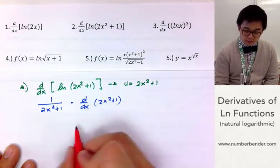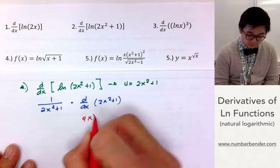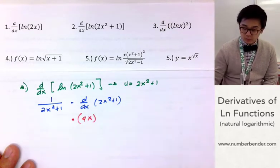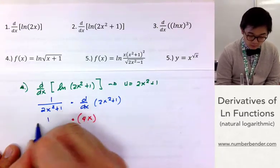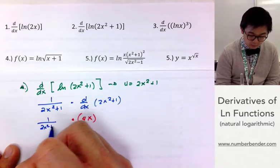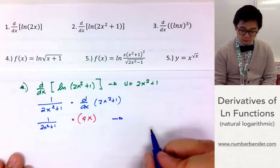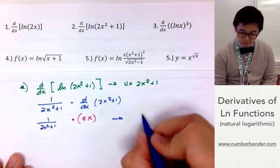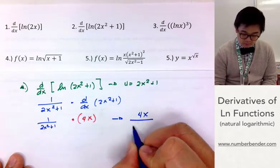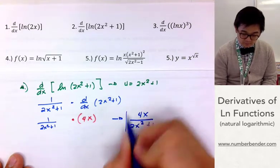We know that the derivative of 2x² + 1 is simply 4x. We are just going to multiply it with 1 all over (2x² + 1). So our derivative function will simply be 4x all over (2x² + 1).